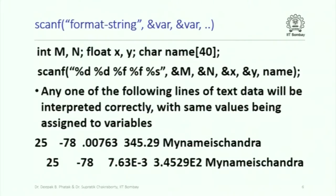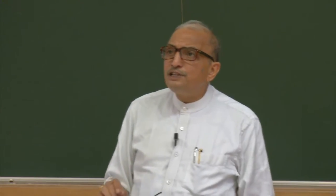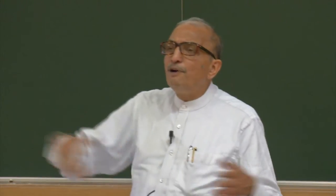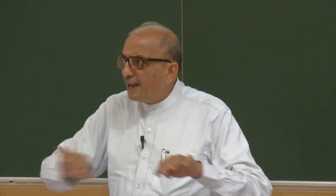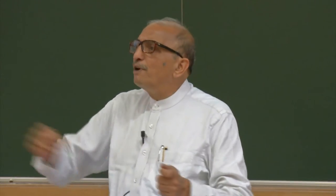%d is for integer, %f is for floating point, %c is for a single character, and %s is for a string. Notice that one blank in the scanf format string is interpreted differently from printf: one blank stands for any number of blanks or white spaces, including tab characters. Consequently, if you type five blanks between two values, they are equivalently represented by a single blank. scanf will interpret values correctly and assign exactly the same values to all variables, regardless of extra spaces.